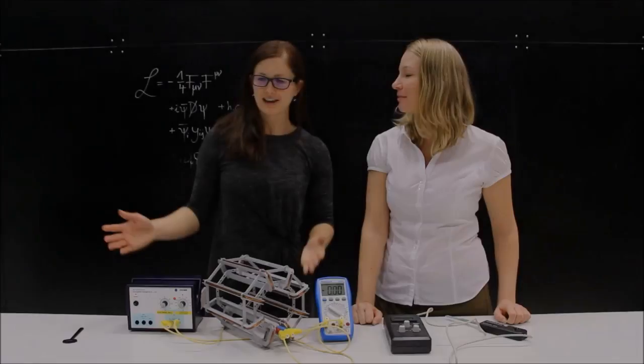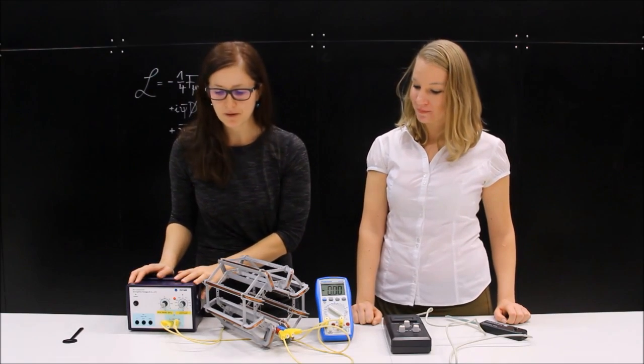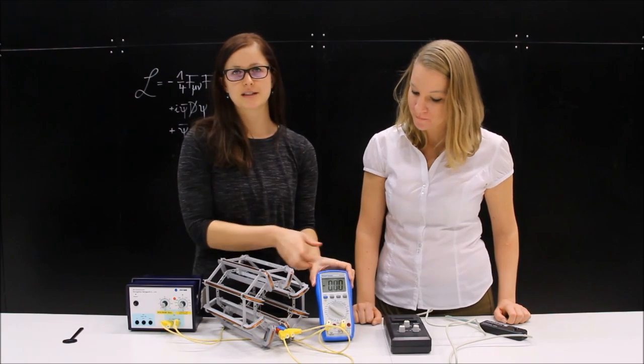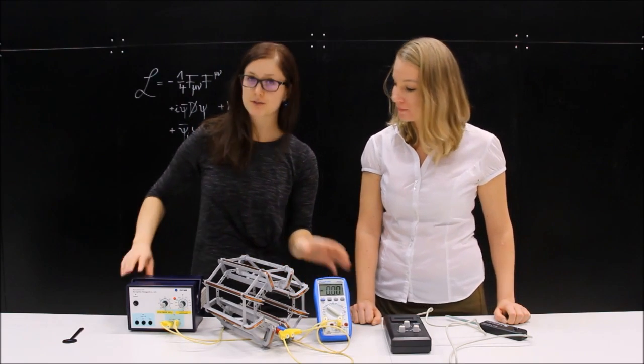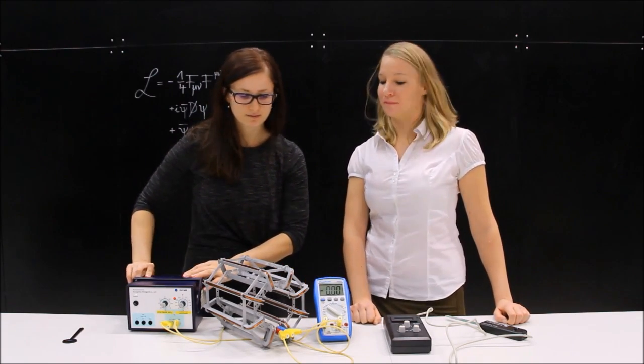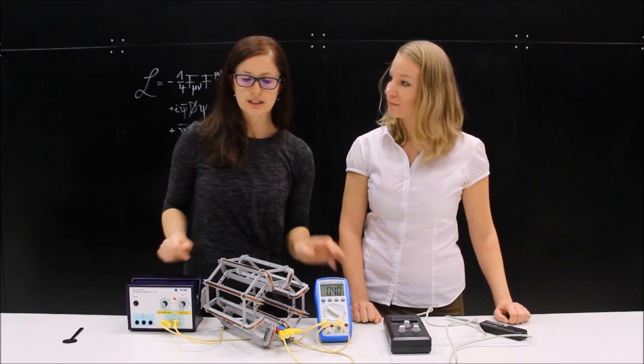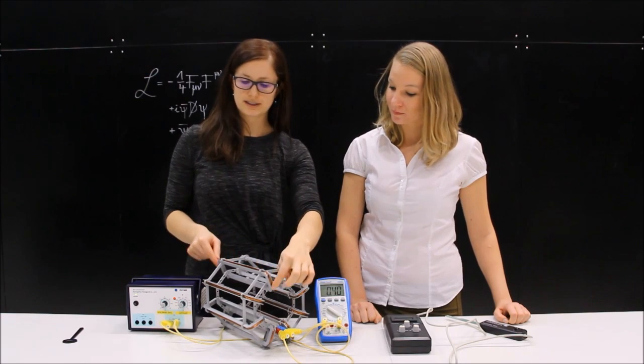It has two banana sockets, so I would just connect it to a power supply. Okay, so now we have a power supply here connected to the Atlas model. In series, we also connect the multimeter to monitor the current. And when I switch on the power supply now, you see that we can measure 0.4 amps of current going through the copper wire of the coils here.